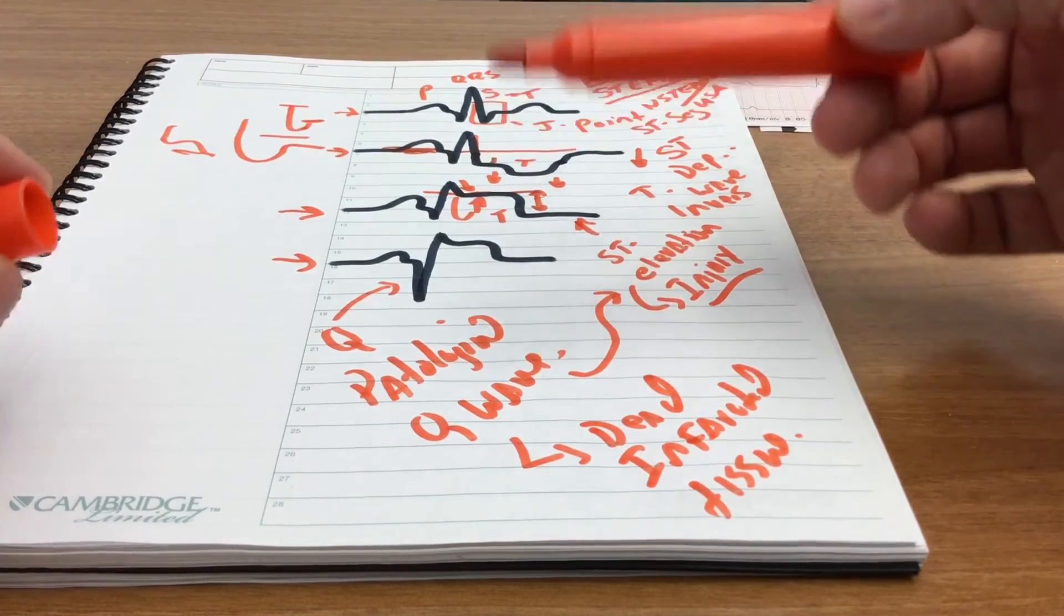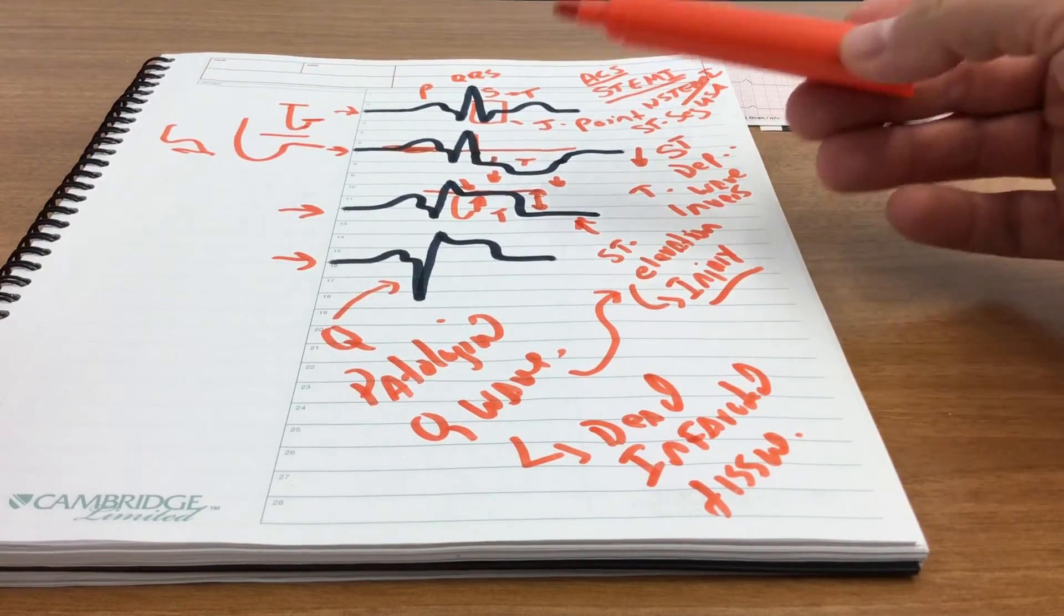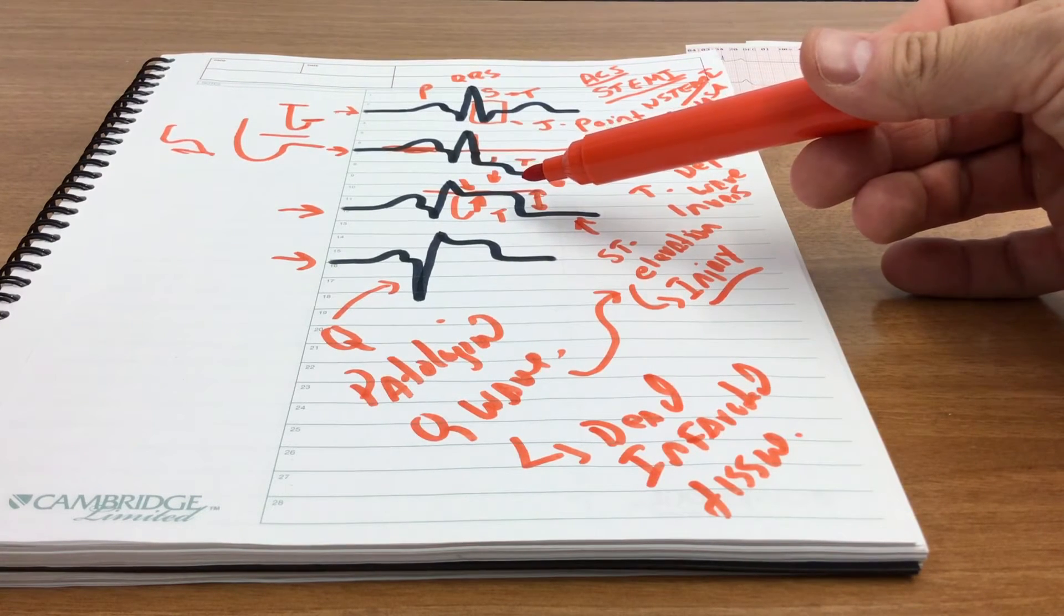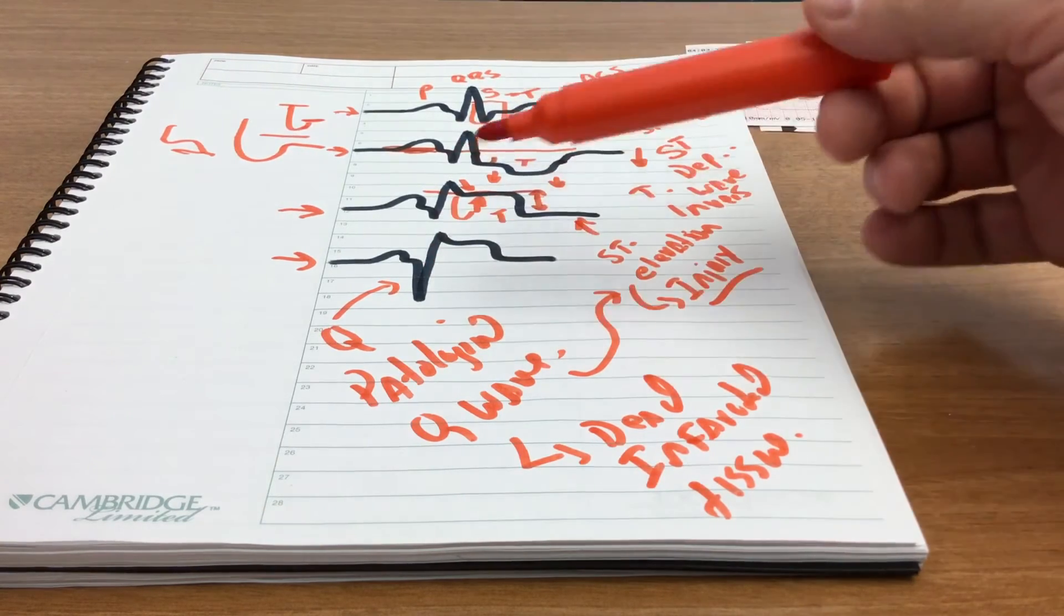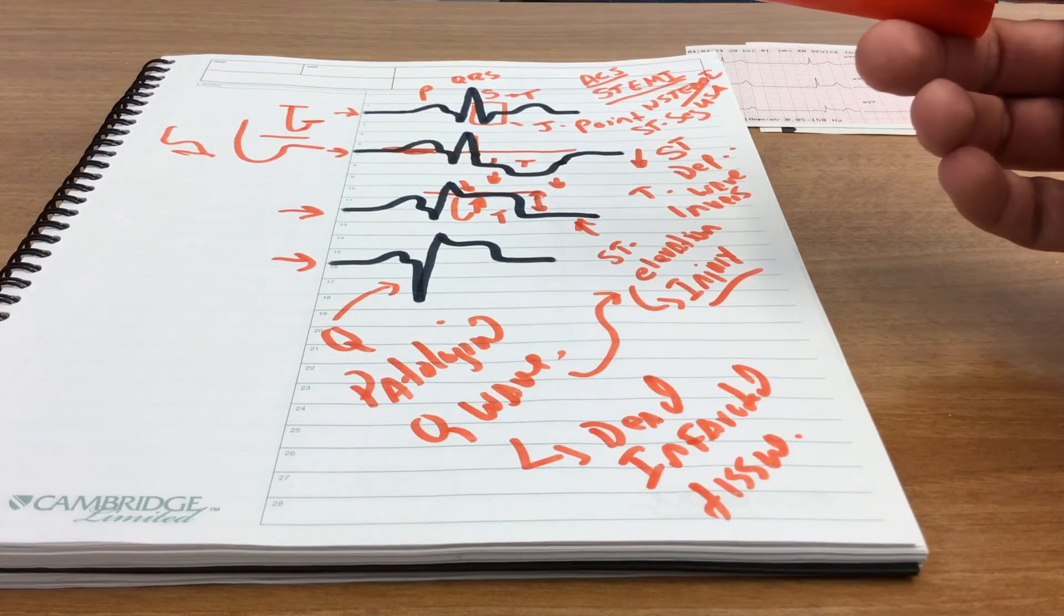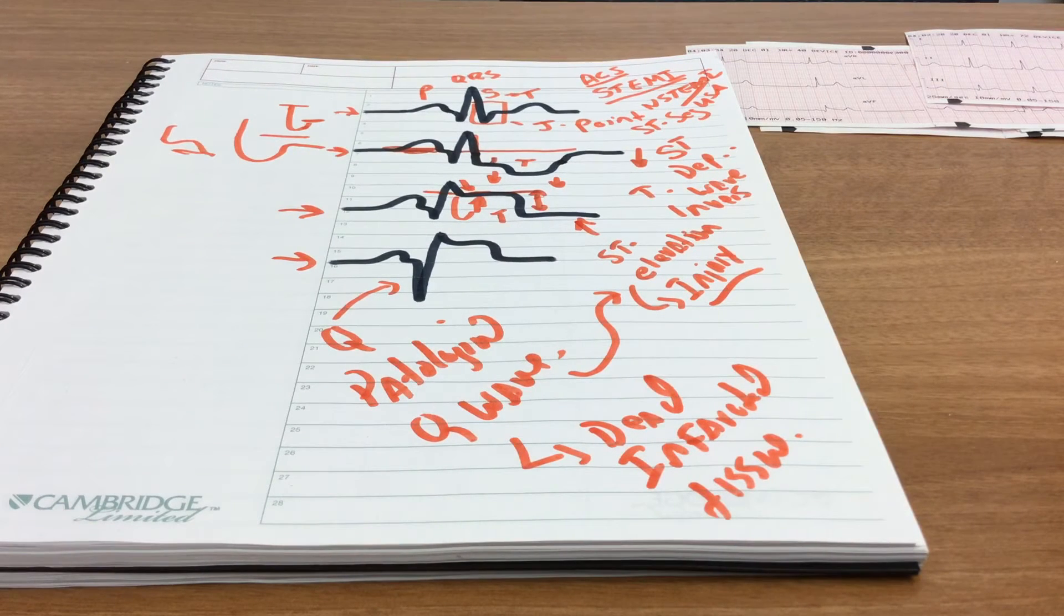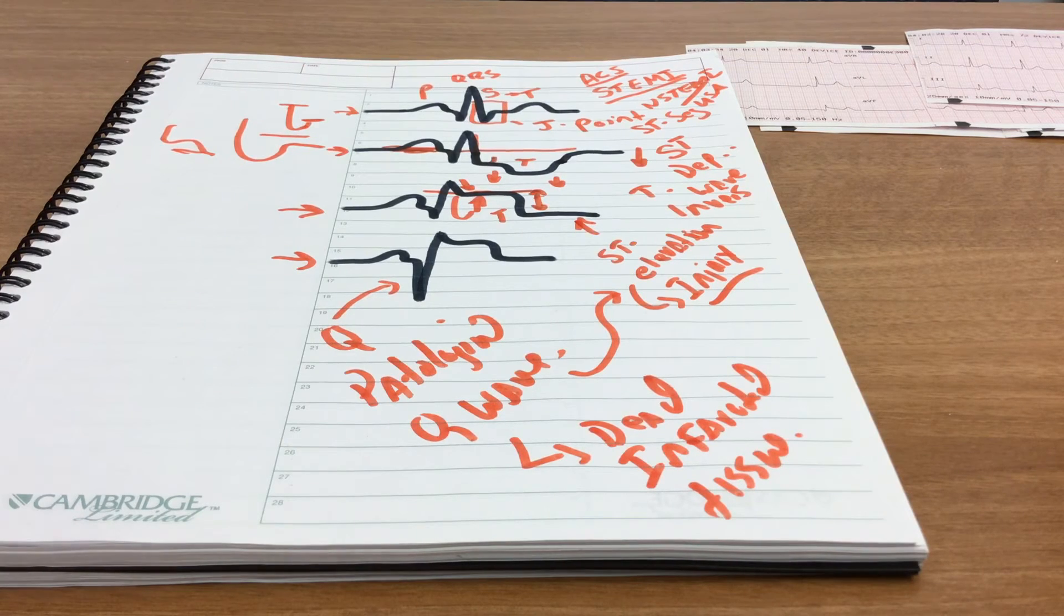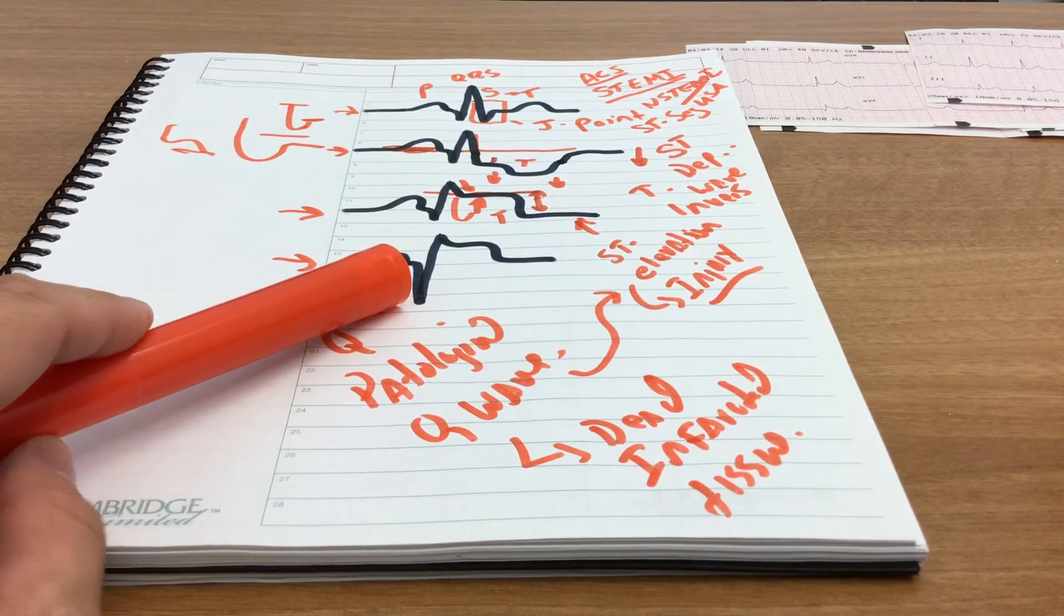So when somebody recovers from having a STEMI, the ST segment elevation may go away, but because they have some dead tissue, the Q waves tend to stay forever. So the Q wave may or may not indicate an acute process. It's hard to tell. If you do not have an old 12-lead ECG, you can't really make a solid diagnosis based on the presence of Q waves alone, because these tend to stay with you forever once you've had a significant STEMI.